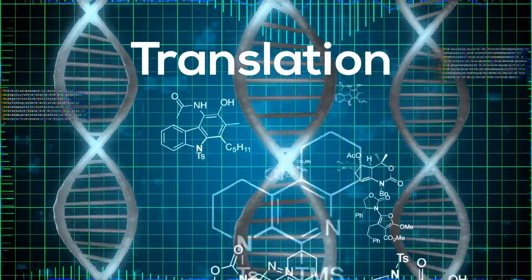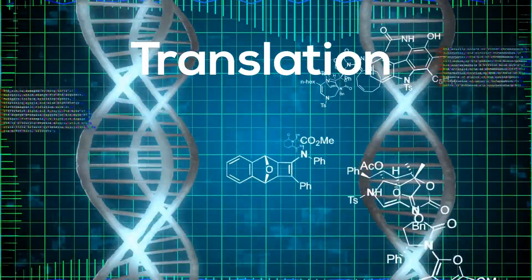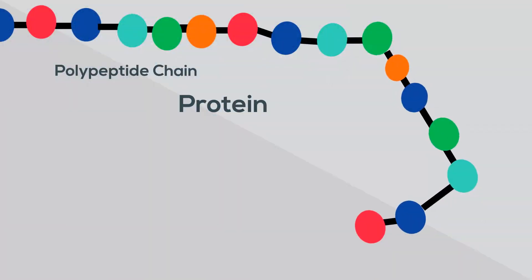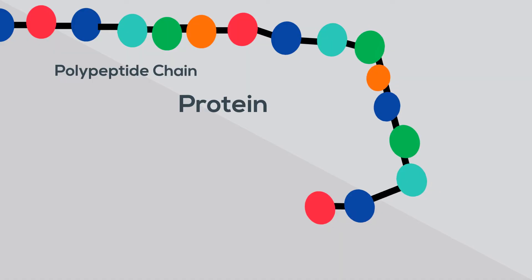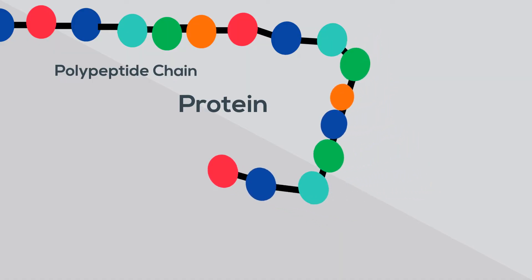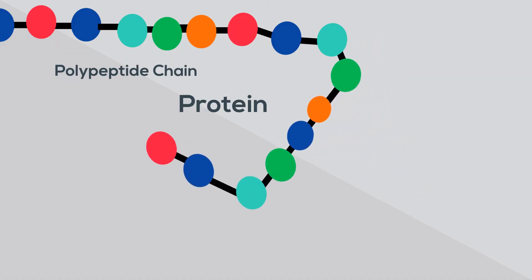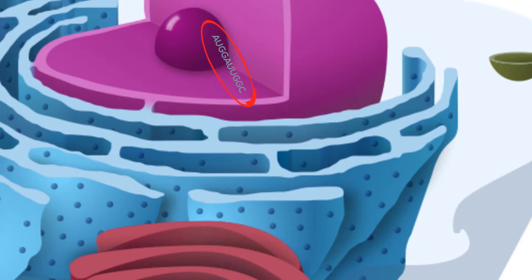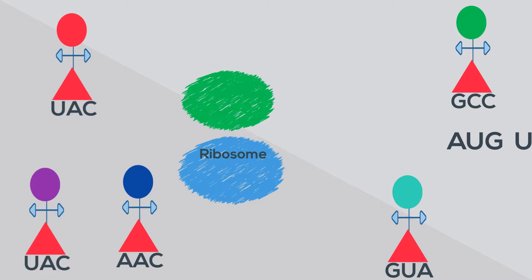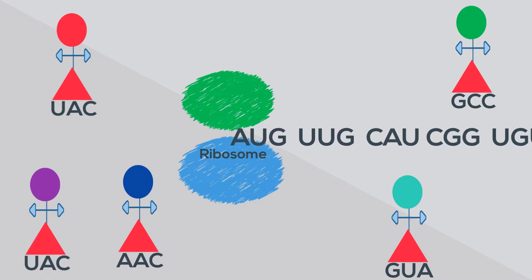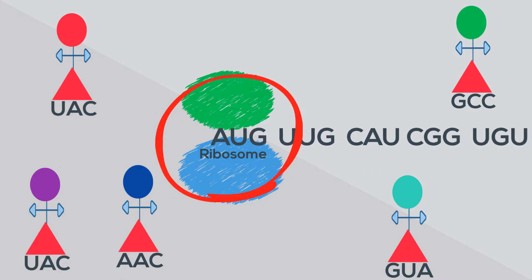Translation occurs at the ribosome and is an important stage of protein synthesis. Messenger RNA that has traveled from the nucleus arrives at a ribosome. Ribosomes are found in the cytoplasm and in some cells at the ER.